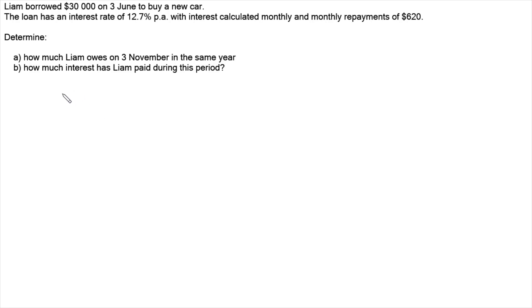So we're going to use the recurrence relation A(n+1) = r*A(n) - R. And this relation gives us the value at the end of every period, in this case month, throughout the loan.